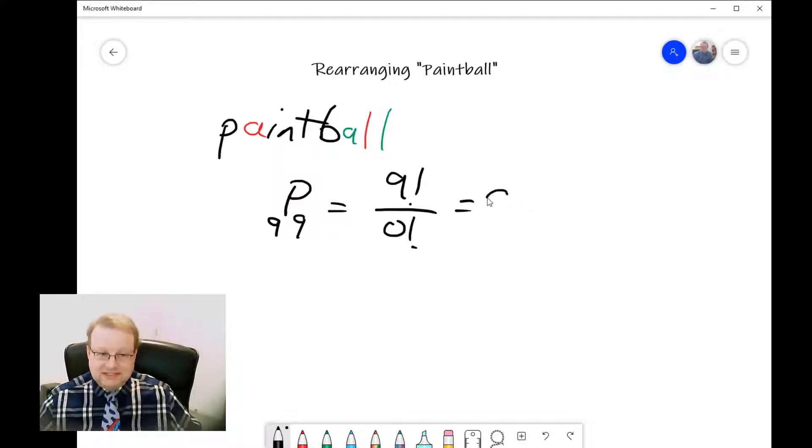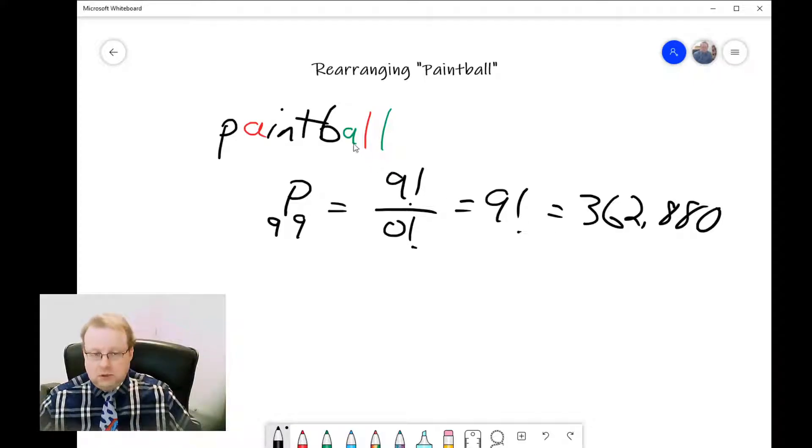Which is nine factorial, or 362,880. But in doing so, we're able to distinguish between the A's and L's because they're different colors. In most of these problems, we don't care about the color of the letters, so they're not distinguishable. We've overcounted—two factorial ways for the A's and two factorial ways for the L's.